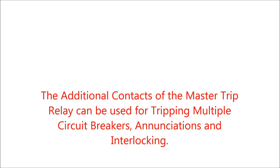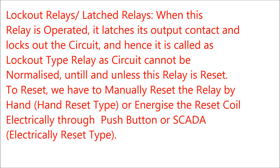Types of Master Trip Relays. Type 1: Lockout relays or latch relays. When this relay is operated, it latches its output contacts and locks out the circuit breaker. Hence it is called a lockout type relay, as the circuit breaker cannot be normalized or closed until and unless the relay is reset. To reset, we have to manually reset the relay flag or energize the reset coil through an electrically operated push button or SCADA.